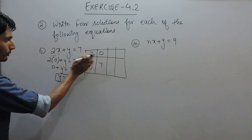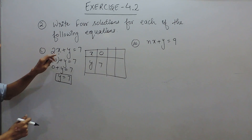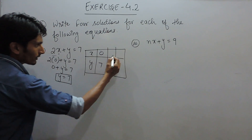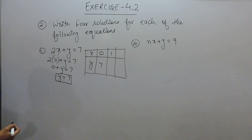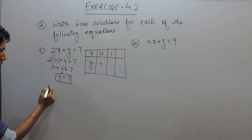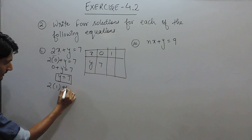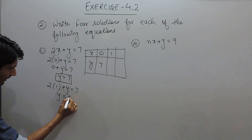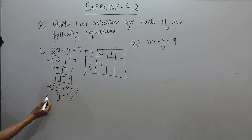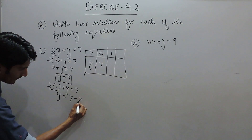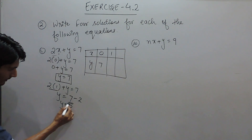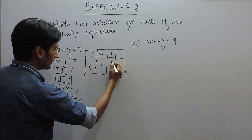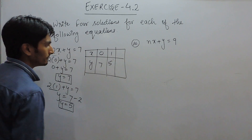Satisfying means when we substitute these values, the right-hand side and left-hand side become equal. Now put x equal to 1: this gives 2 into 1 plus y equals 7, so y equals 7 minus 2, and the value of y becomes 5. So when x equals 1, the value of y is 5.